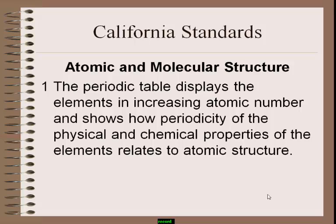Elements with similar properties are present in the same group. The elements which contain similar physical as well as chemical properties are placed in a particular group. For example, alkali metals like sodium, potassium, and rubidium are all reactive elements, and therefore they are present in group one.